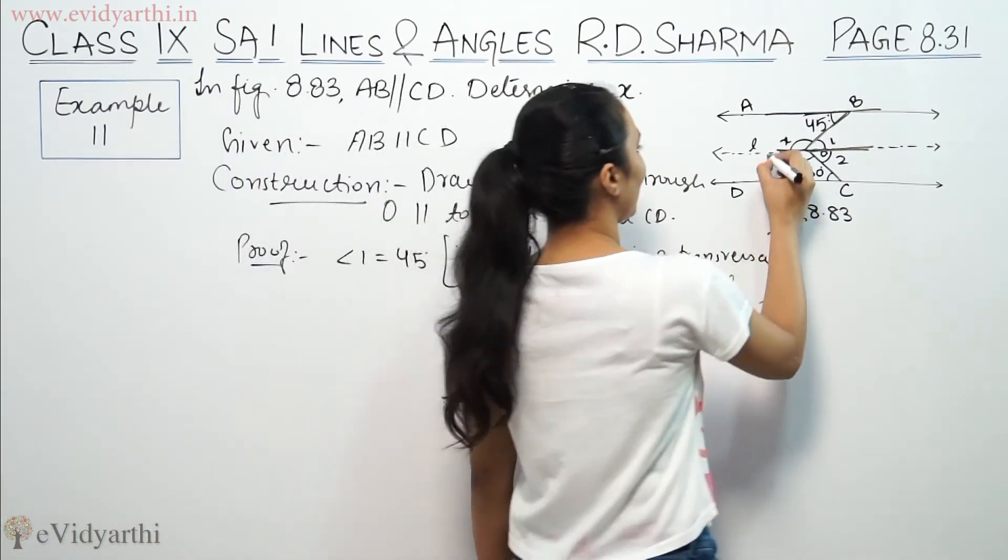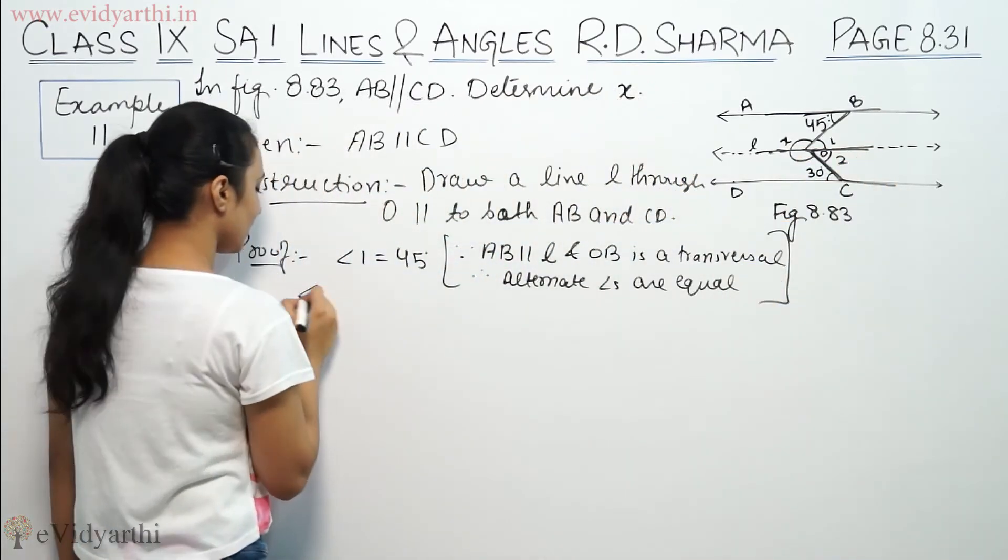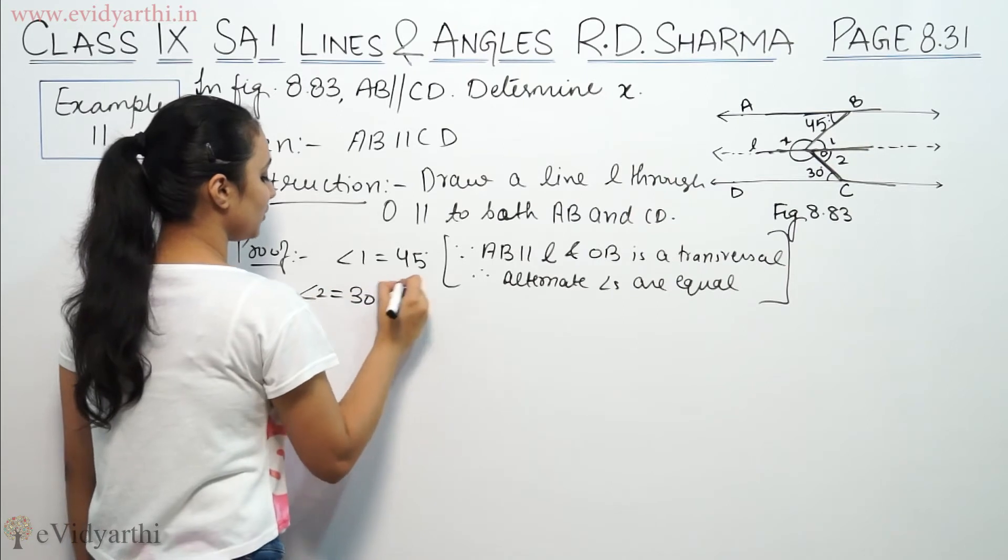Similarly here, this angle 2 - this is a Z shape. So angle 2 will also equal 30 degrees. So angle 2 is 30.